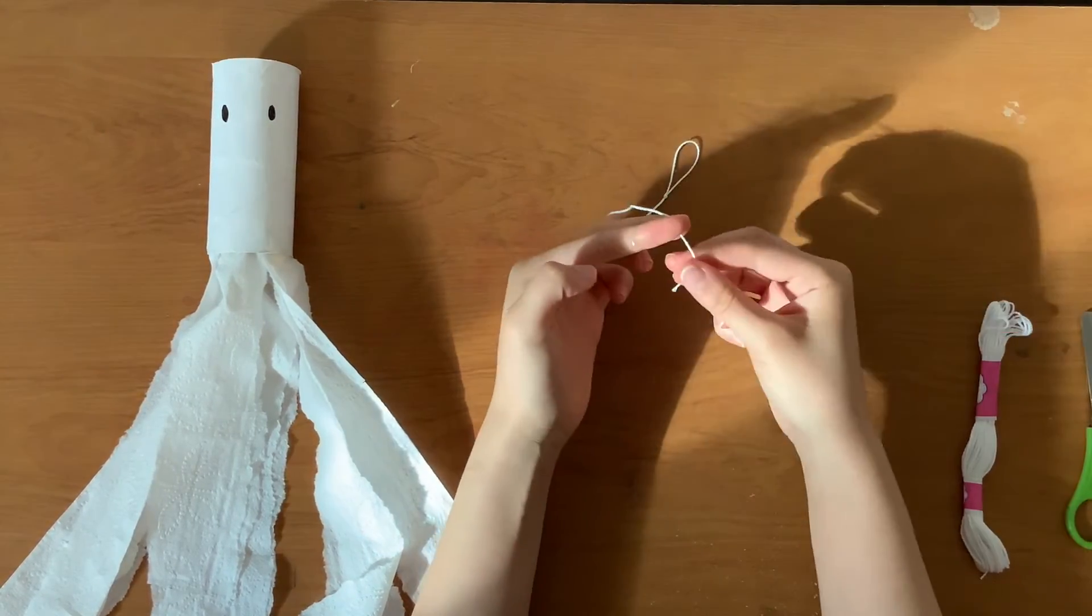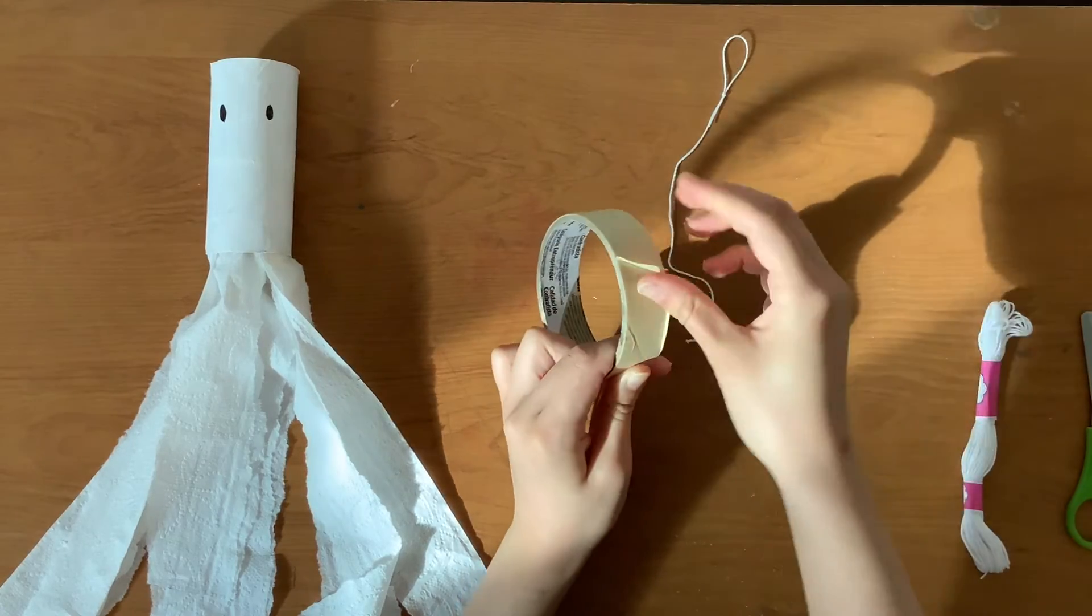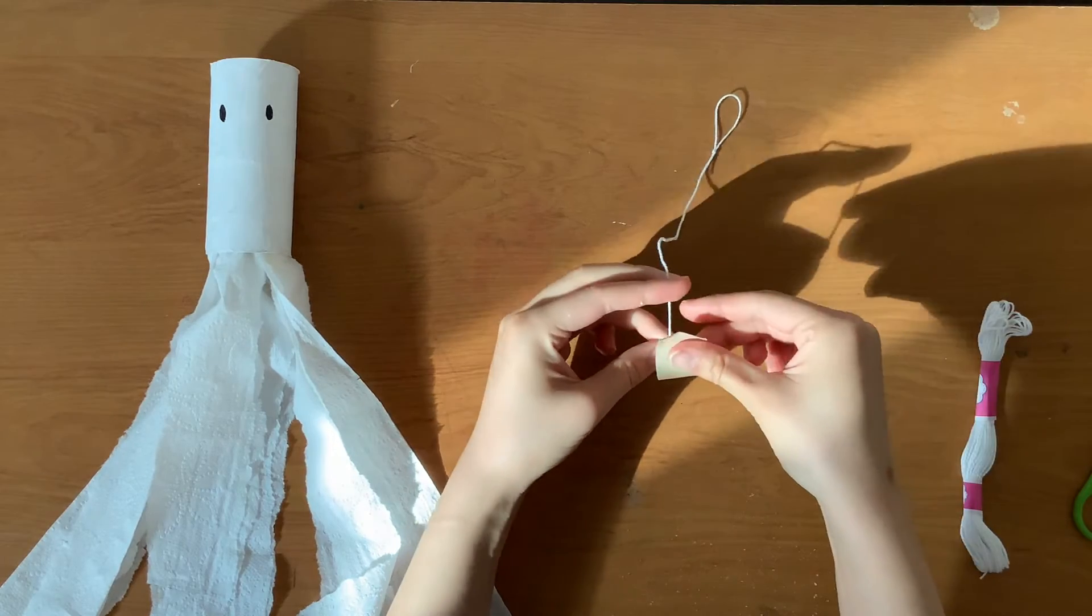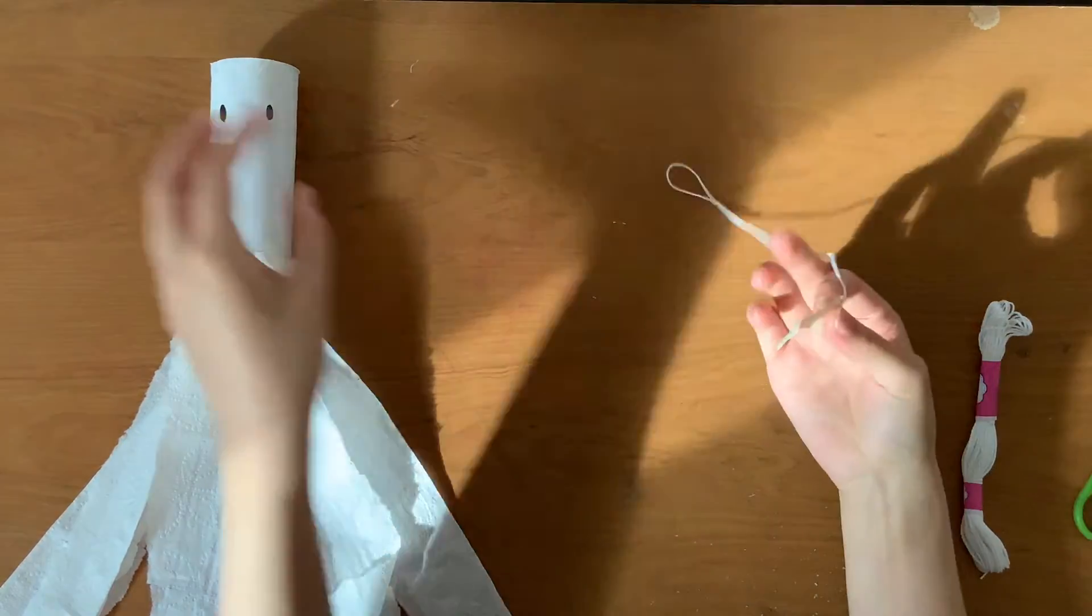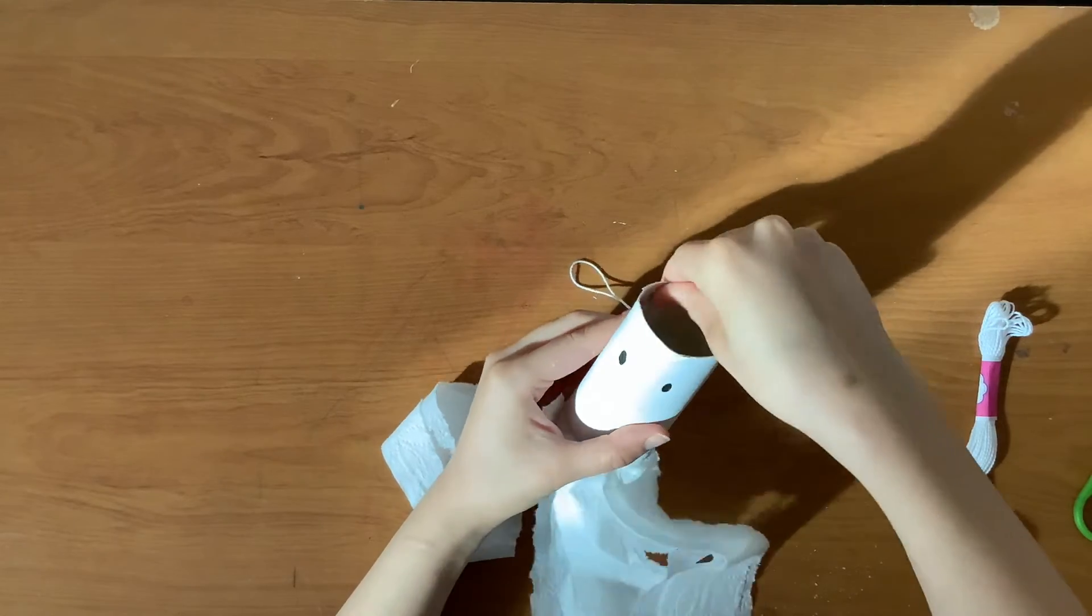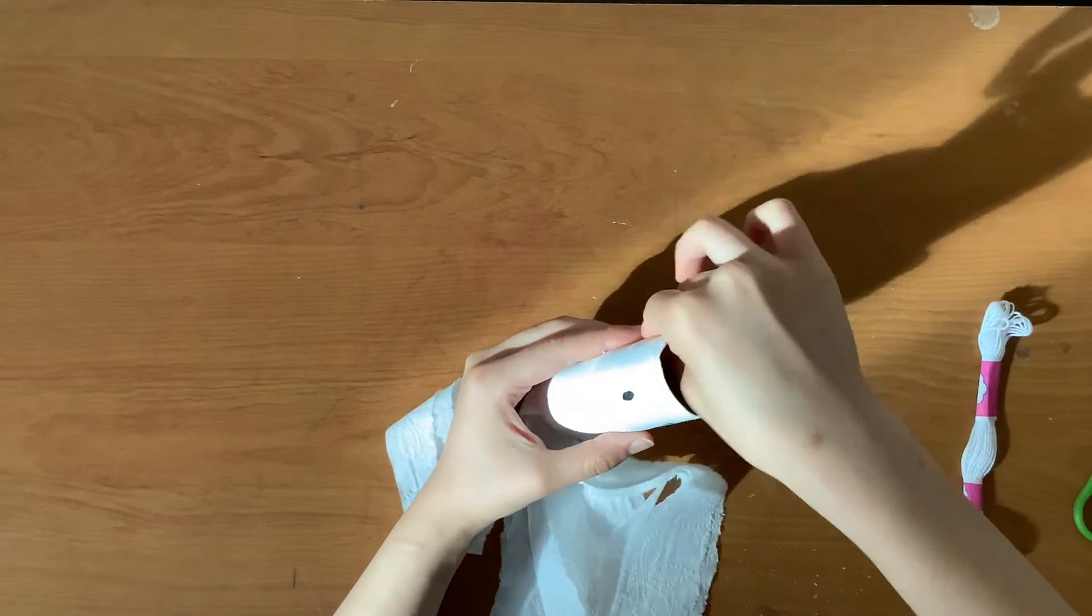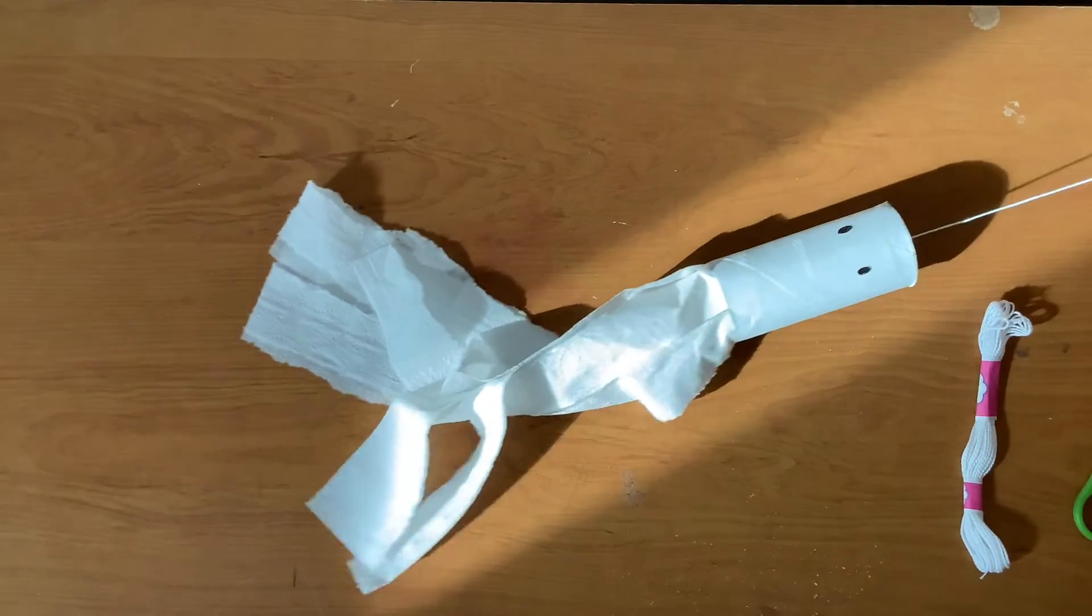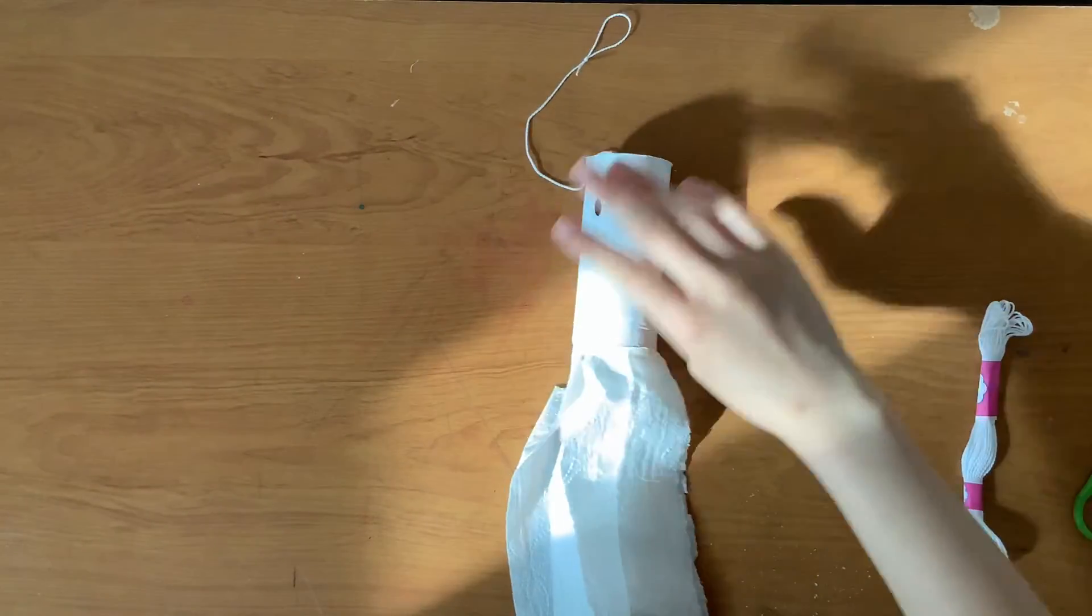For the other end we're going to be using a piece of tape and tape it to the head of the ghost. So similar to how we did the toilet paper, I'm taping the tape to the string first and then taping the entire thing to the inside of the toilet paper roll. Now this string will allow you to hang up the ghost as a decoration.